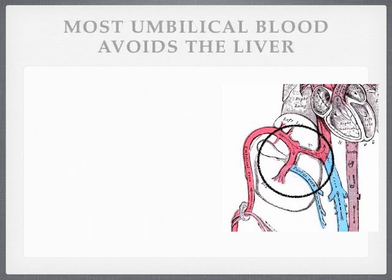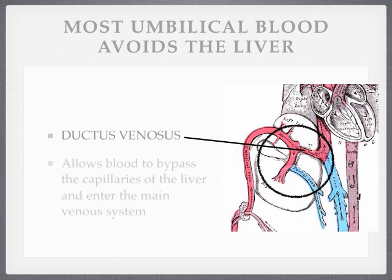And there it is — this is called the ductus venosus. The umbilical blood is going to pass through this ductus venosus and avoid all of the capillaries.